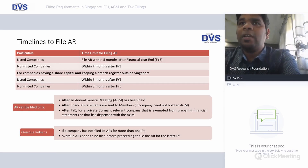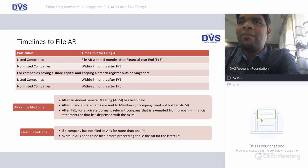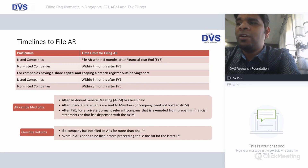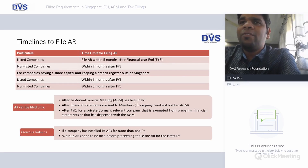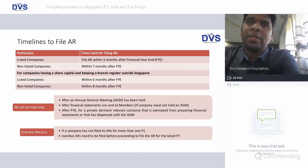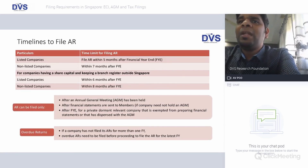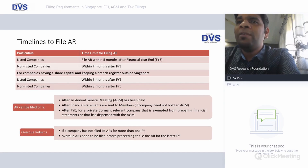Regarding annual return filing dates: for listed companies, the AR must be filed within five months after the financial year end; for non-listed companies, within seven months after the financial year end. For companies maintaining a branch register outside Singapore: listed companies have six months after financial year end, and non-listed companies have eight months. The AR can only be filed after the AGM has been held and financial statements are sent to members, or after the financial year end is completed for private dormant or relevant companies exempted from preparing financial statements or dispensed from the AGM.